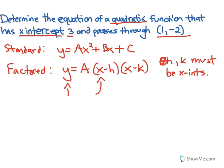And if x is h, that would make this bracket zero. If x is k, that would make that bracket zero. So that's how you get what your x-intercepts are.